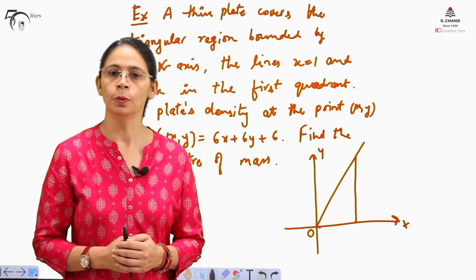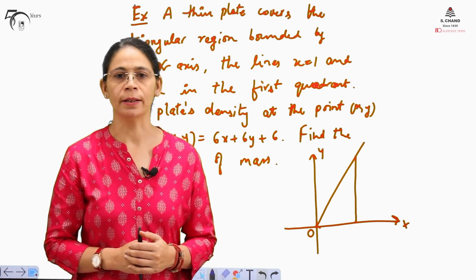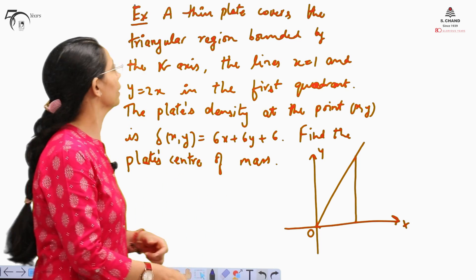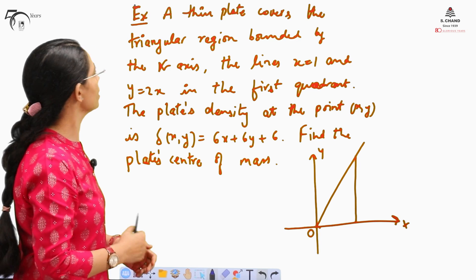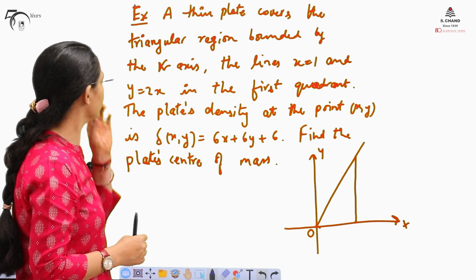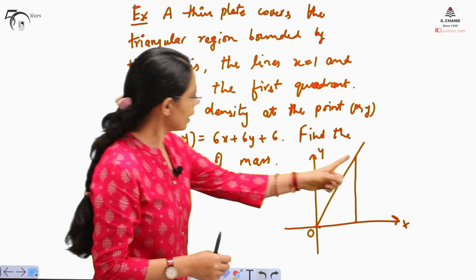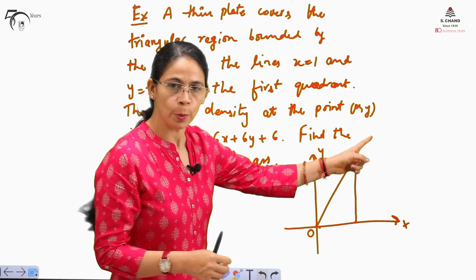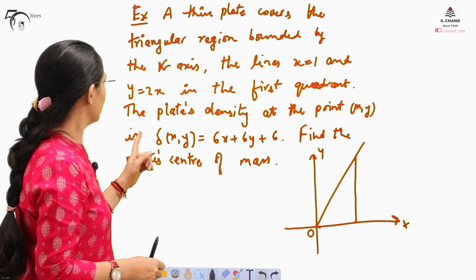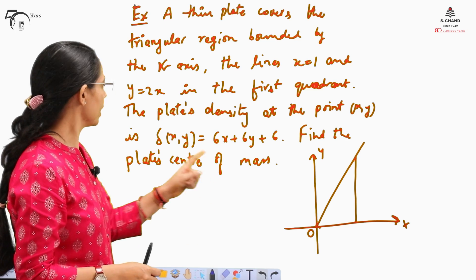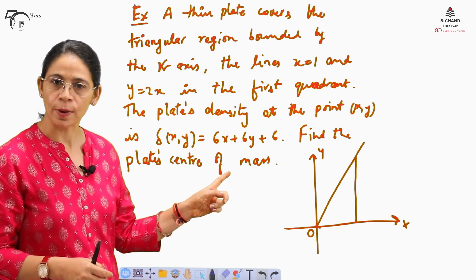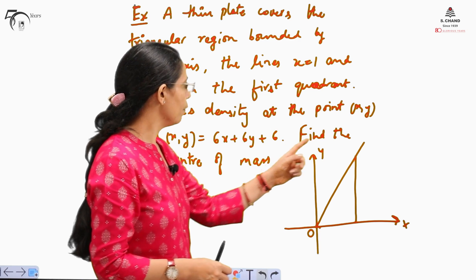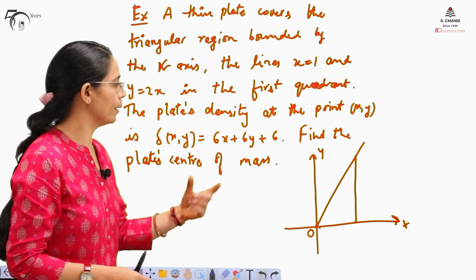We will learn how to find out the center of mass. For this, we will take one example: a thin plate covers the triangular region bounded by the x-axis, the lines x equal to 1 and y equal to 2x in the first quadrant. The plate's density at the point (x, y) is given as δ(x,y) = 6x + 6y + 6. We need to find out the plate's center of mass.